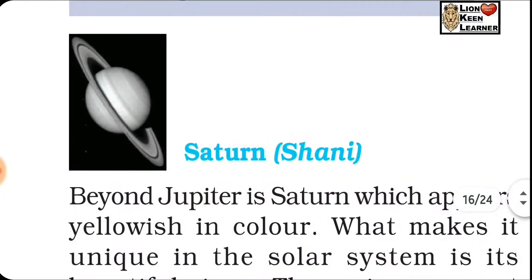Neptune's diameter is 48,600 km, distance from sun is 4504×10⁶ km, and it completes one revolution around the sun in 165 years. Neptune has approximately 14 moons.